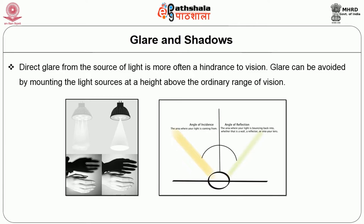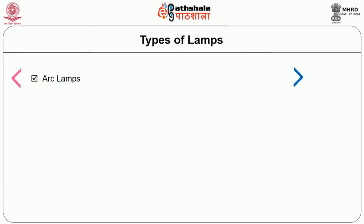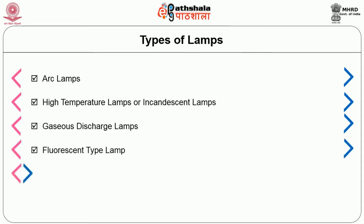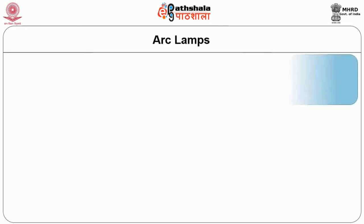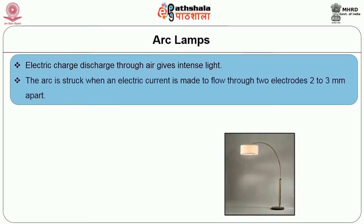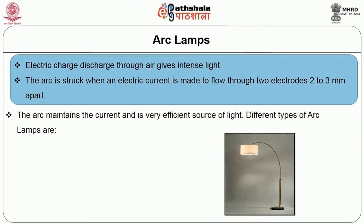Types of lamps: arc lamps, high temperature lamps, gaseous discharge lamps, fluorescent lamps, CFL lamps, and LED lamps. Arc lamps: electric discharge through air gives intense light. The arc forms when an electric current is made to flow between two electrodes two to three millimeters apart. The arc maintains the current and is a very efficient source of light. Different types of arc lamps are carbon arc lamps, flame arc lamps, and magnetic arc lamps.